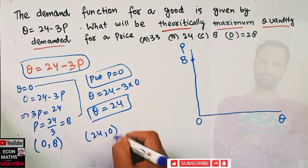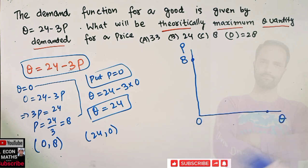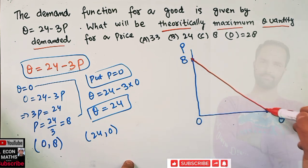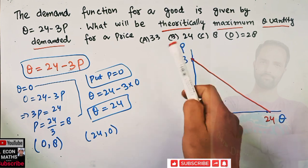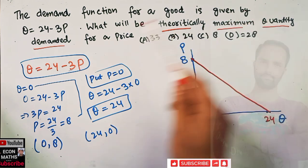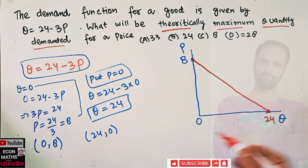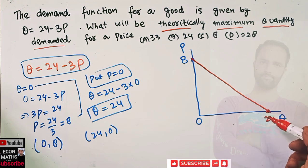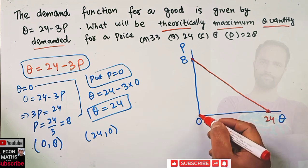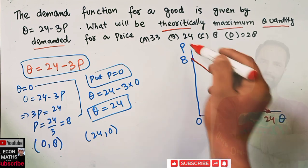So we get two points: q = 24 when p = 0. When price is equal to 0, quantity demanded is 24. This is our demand curve, and the intercept is 24. The question was: what is the theoretically maximum quantity demanded? In this equation, maximum quantity demanded occurs when price is equal to 0, and that value is 24.